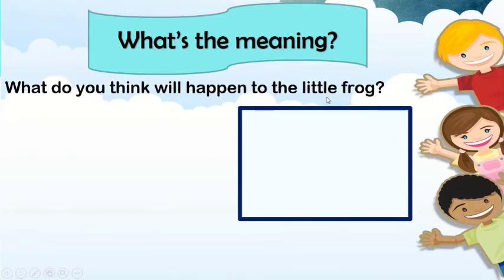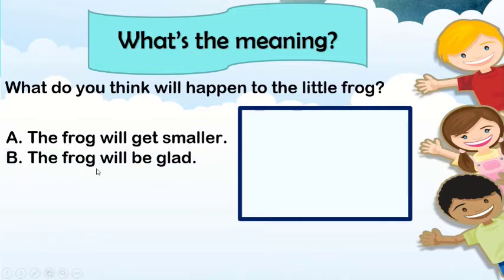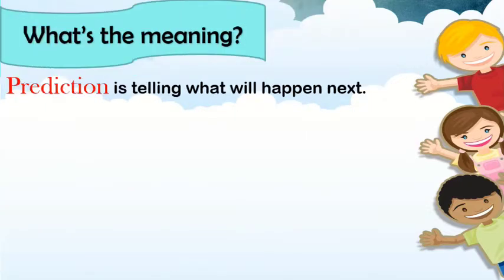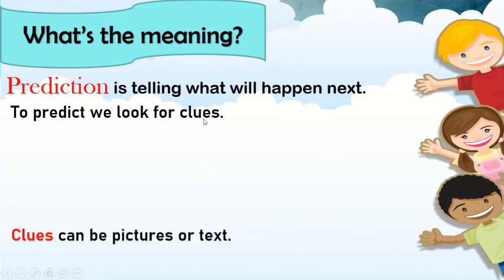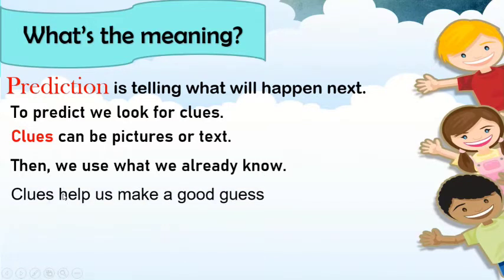Now what do you think will happen to the little frog? Here are the choices. A: The frog will get smaller. B: The frog will be glad. C: The frog's body will burst. What did you apply from the activities? We learned about predictions. Prediction is telling what will happen next. To predict, we look for clues. Clues can be pictures or text. Then we use what we already know. Clues help us make a good guess. We make a prediction.